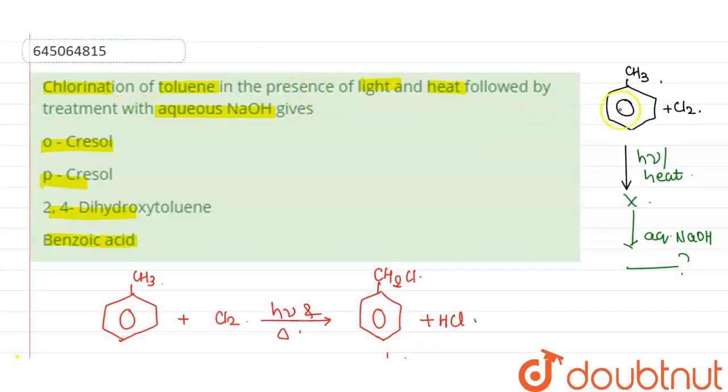So, the product of this reaction is benzoic acid. So, we have seen the chlorination of toluene in presence of heat and light followed by treatment with aqueous NaOH will be giving us benzoic acid. So, the last option is correct here. Thank you.